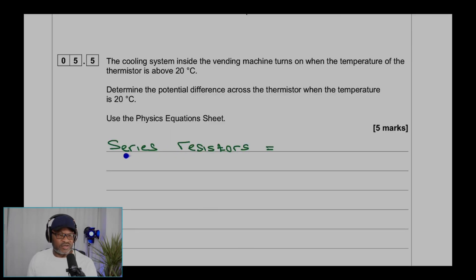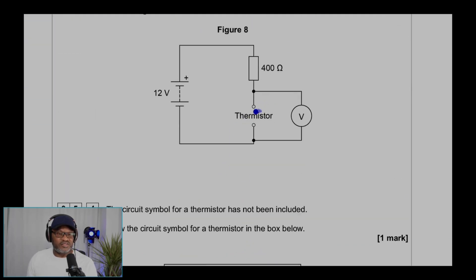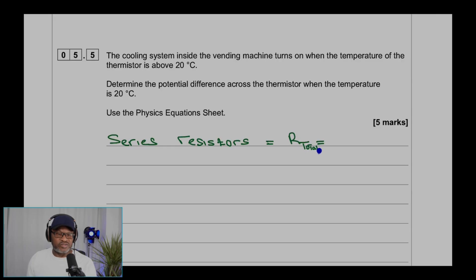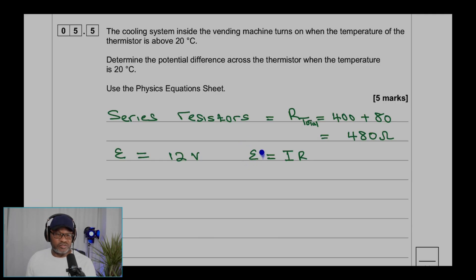We write the total resistance of the series circuit. The thermistor is 80 ohms at 20 degrees and the fixed resistor is 400 ohms. We need the total resistance to find the total current flowing in the circuit. The total resistance is 400 plus 80, which is 480 ohms. We know the power supply is 12 volts, and using Ohm's law, voltage equals current times resistance.